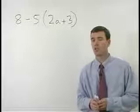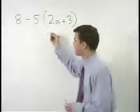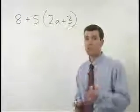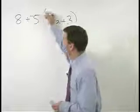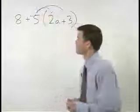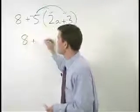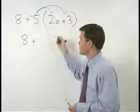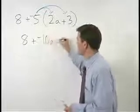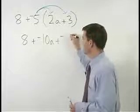So the first thing you want to do here is distribute and change this minus 5 to plus a negative 5 so that you know you're distributing a negative 5 through your parenthesis. So we have 8 plus negative 5 times 2a is negative 10a plus negative 5 times positive 3 is negative 15.